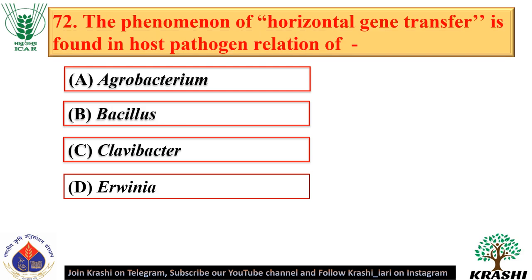Question number 72. The phenomenon of horizontal gene transfer is found in the host-pathogen relation of Agrobacterium — option A.